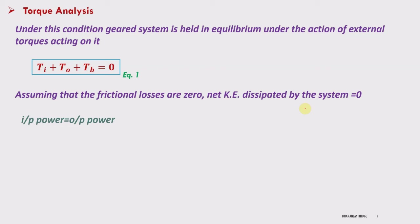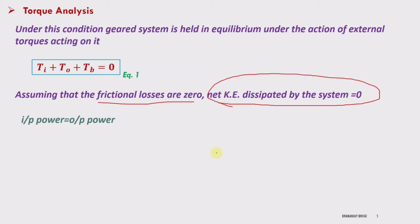Second assumption: the gear train operates at 100% efficiency, meaning frictional losses are zero. When frictional losses are zero, the net kinetic energy dissipated by the system will be zero — input power equals output power. So the summation of power, which is the product of torque and angular velocity, should equal zero: Ti·ωi + To·ωo + Tb·ωb = 0.